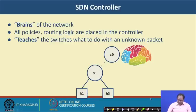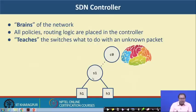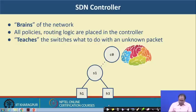The architecture has a controller — which is nothing but a general purpose computer acting as the brain of the network — and multiple switches. These switches are dumb; the controller actually decides and teaches the switches how to forward a packet, and then you can have multiple hosts. This is a simplified architecture to explain the basic concept of SDN.